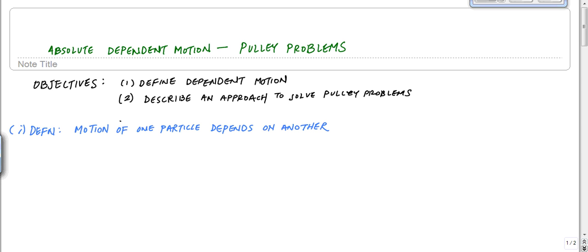All right, what's up everybody? It's been a long time since I did some dynamics. So by special request, I've had some requests to talk a little bit about pulley problems. So here, I'm going to talk about absolute dependent motion, which for all intents and purposes are pulley problems. The thing that we're going to do here is we'll define what dependent motion is and describe an approach to solve these pulley problems. I'll give you a general overview on how to do that, and then probably in another video I'll do some example problems.